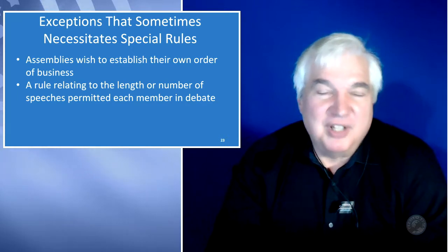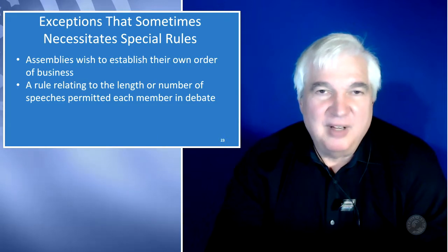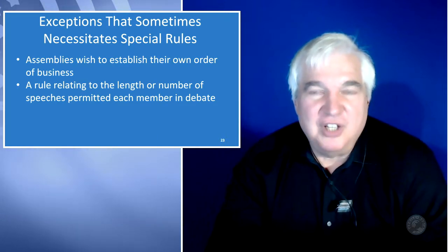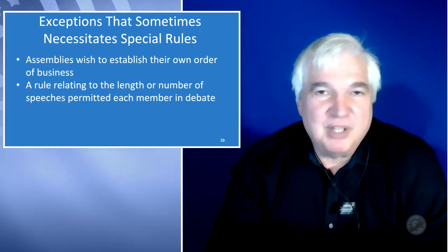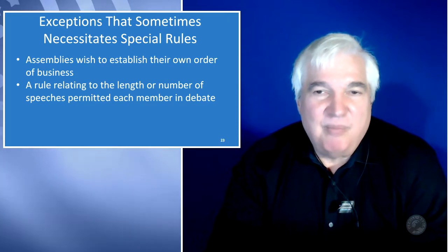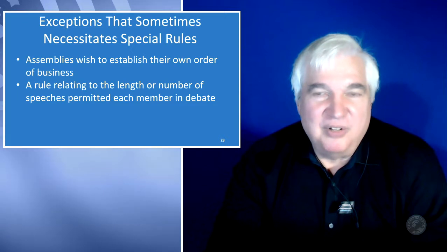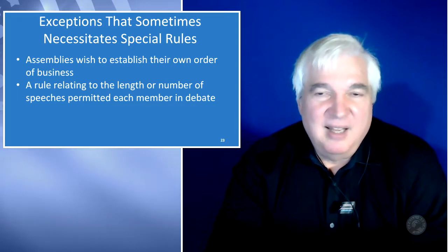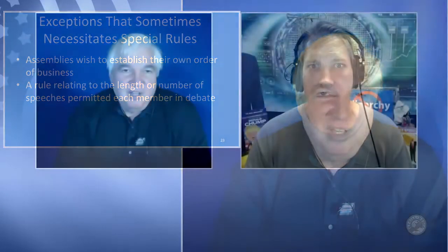Those rules date back to what Thomas Jefferson set up. There used to be filibuster rules, and we find that when it gets too onerous for one party to let the minority party participate, they change the rules to eliminate them. The rules for confirmations used to require 60 votes and now it's just a majority.